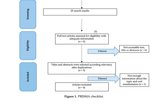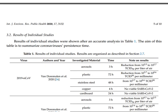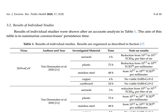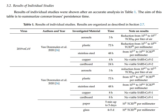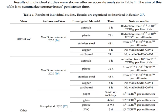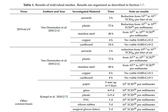The PRISMA checklist is shown in Figure 1. The results of individual studies are shown in Table 1. The results of individual studies are organized as described in section 2.7, covering the virus, year of study, and other parameters.